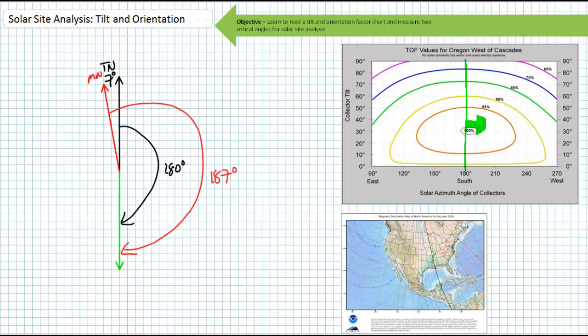One final note before we bring this lecture to a close is an explanation for the asymmetric appearance of the rings on the TOF chart. Notice how the bullseye for Oregon west of the Cascades is more like a bull's oval, shifted ever so slightly to the west. This asymmetric shift, believe it or not, is based upon climatic influences specific to that area.